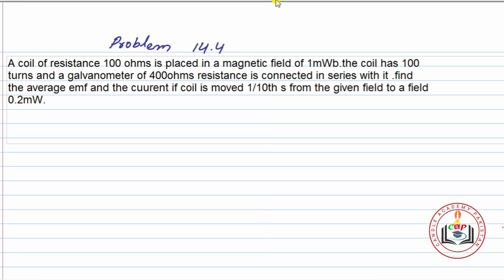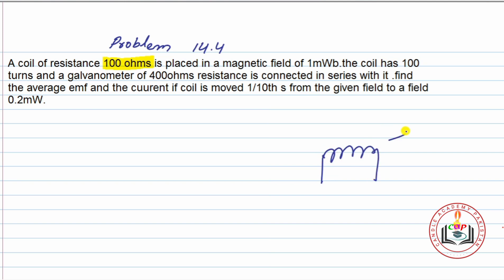بسم اللہ الرحمن الرحیم، السلام علیکم، Kindle Academy Pakistan میں خوش آمدید۔ Electromagnetic Induction، Secondary Physics، Problem number 14.4، Chapter number 14 کا چوتھا problem ہے۔ اس کی statement آپ نے سن لی — ایک coil ہے جس کی resistance 100 ohms ہے۔